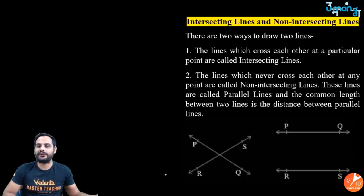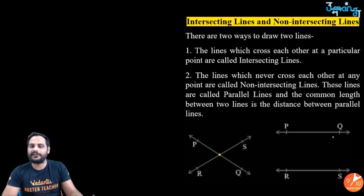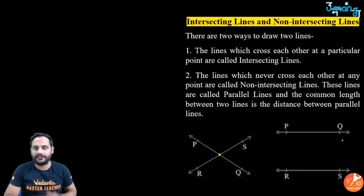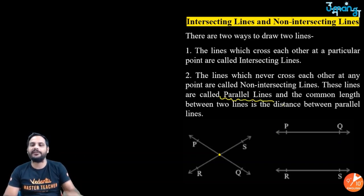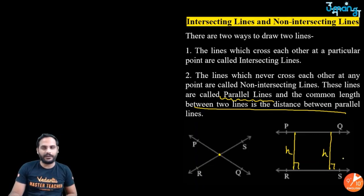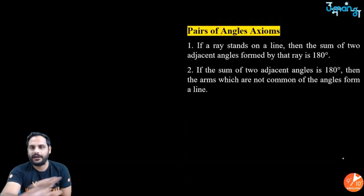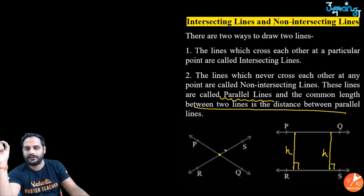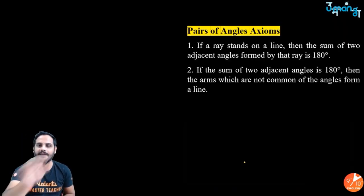Intersecting lines meet at a point, while non-intersecting lines — no matter how much you extend them — will never intersect. These are called parallel lines. The distance between two parallel lines is always equal, and parallel lines never intersect. The vertically opposite angles property applies only to intersecting lines.